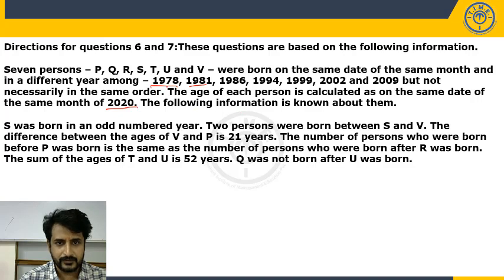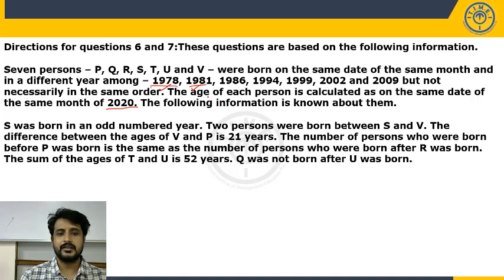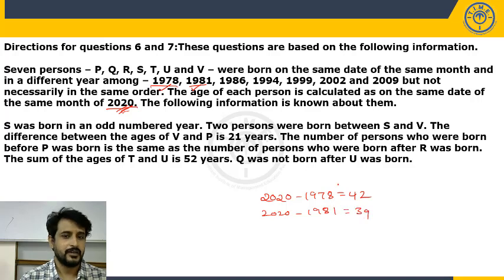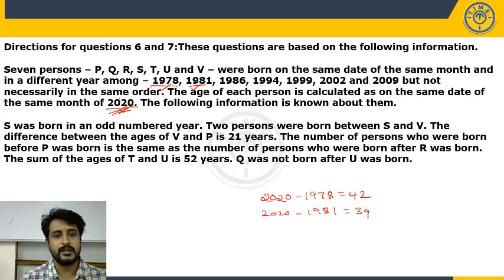From this information, we understand that we don't know who was born in which year, but we can freeze the years. The first person must have been born in 1978, the second in 1981, and so on. The base date is 2020. So we calculate ages: person born in 1978 → age = 2020 − 1978 = 42; born in 1981 → age = 39; and so on. Since all were born on the same date and month, we can directly compute all ages from the base year 2020.